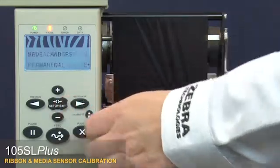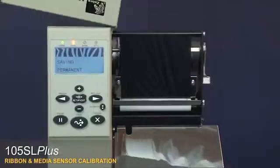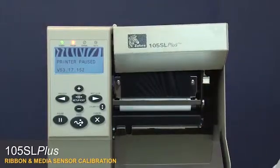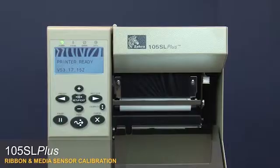Setup exit. Then next save to save your changes. Close the media door. Press pause. Your media and ribbon sensors are now calibrated.